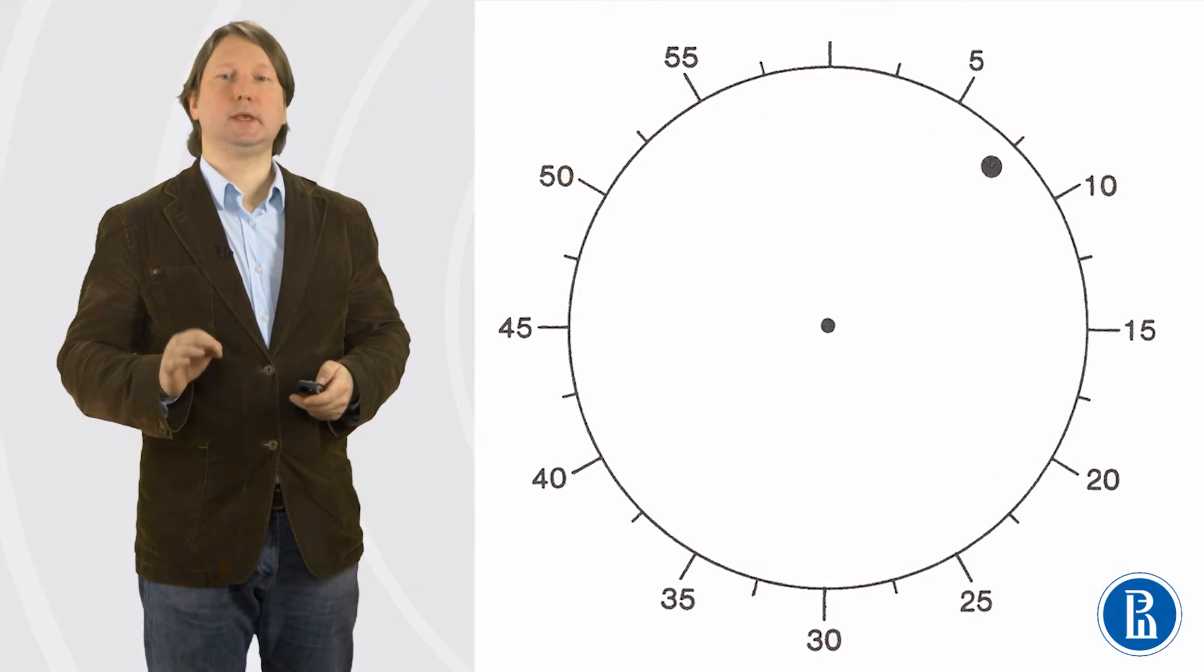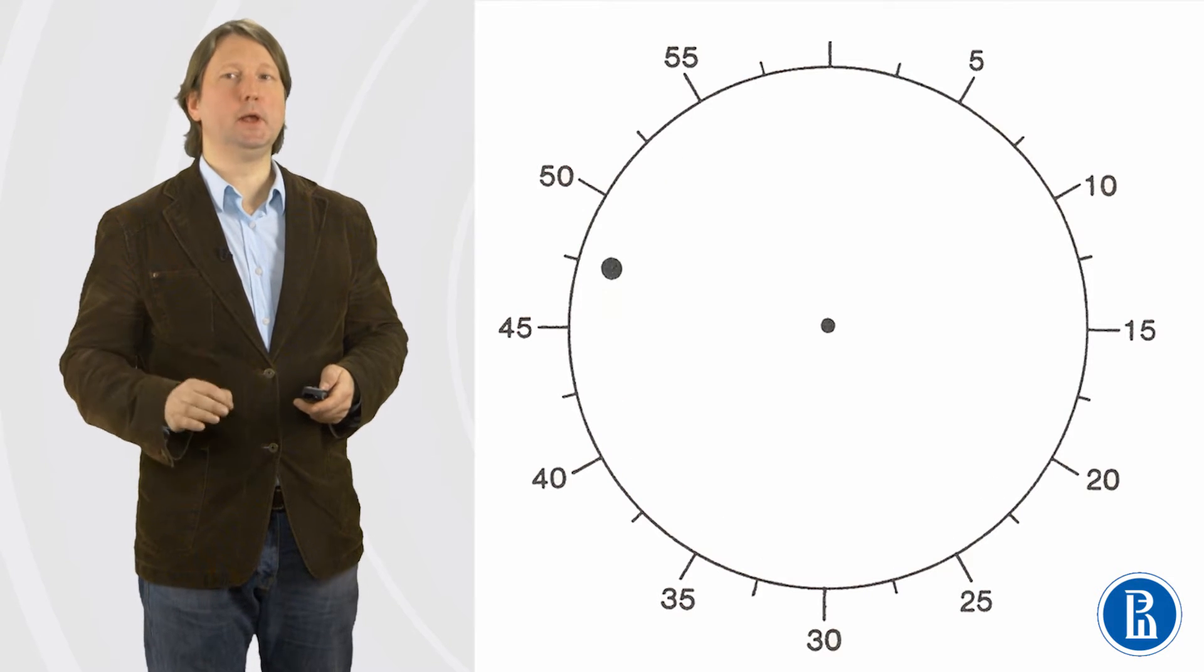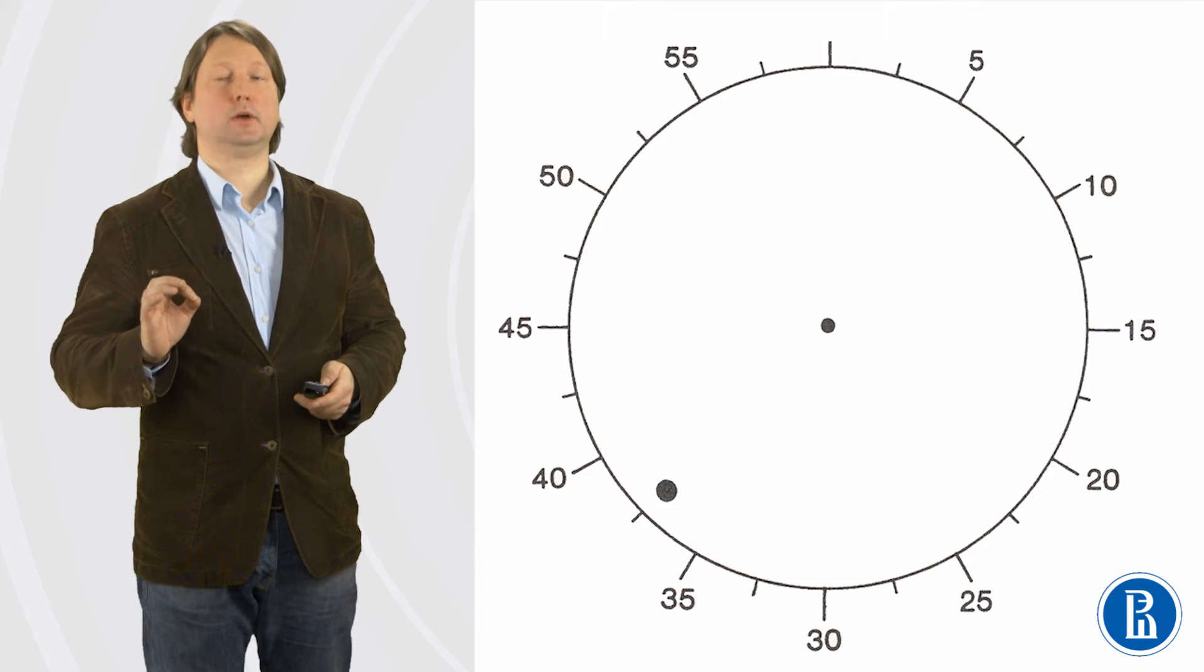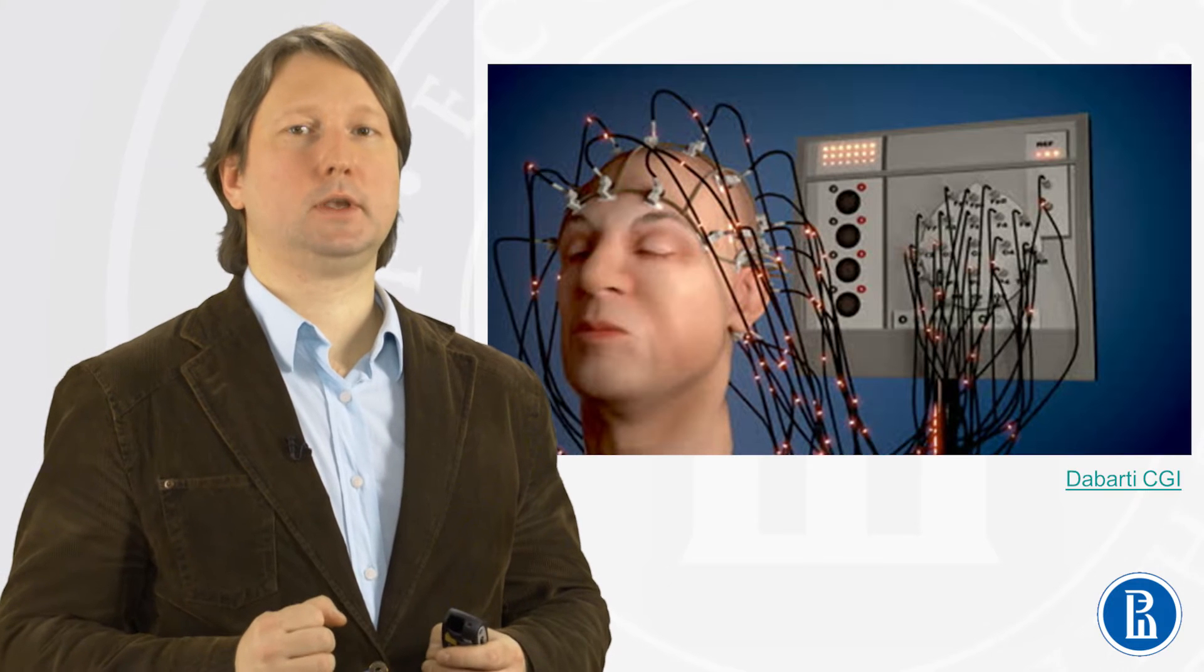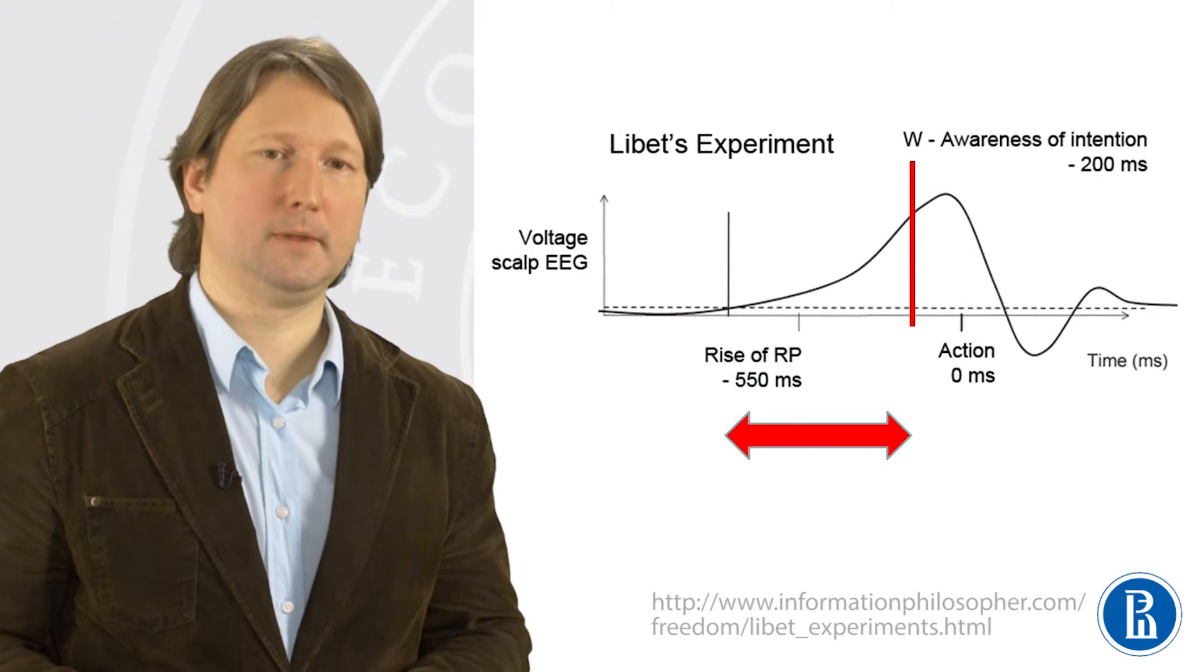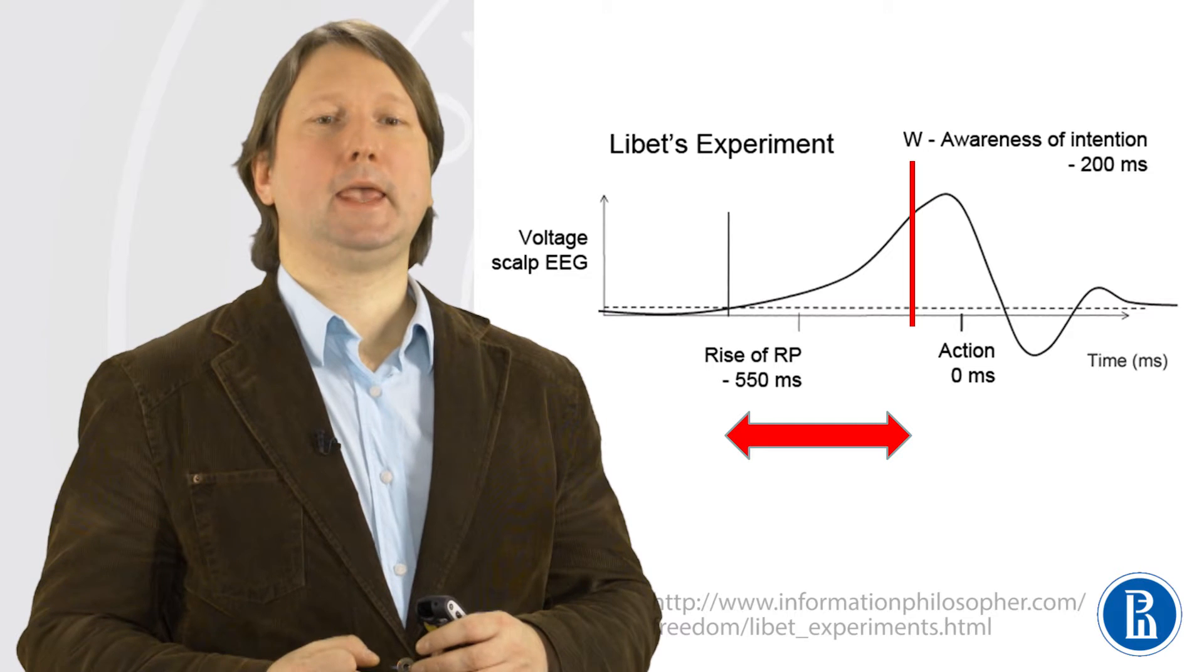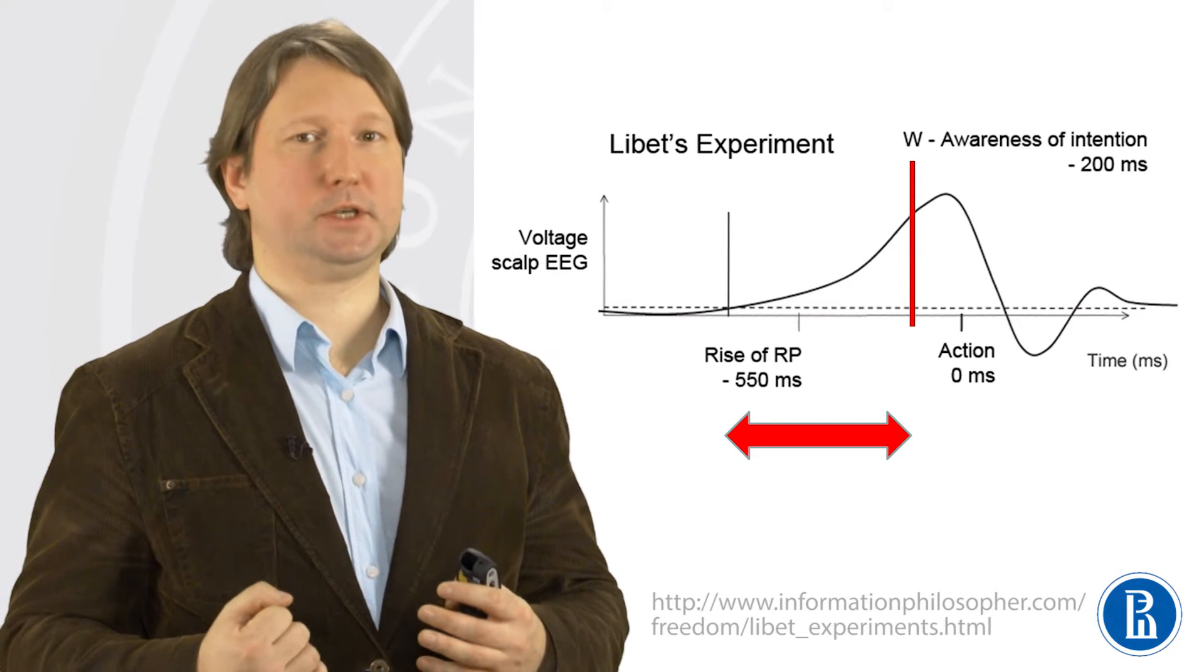With this technique, Libet conducted a very smart experiment and recorded 30 years ago the brain signal related to the decision making. He actually used EEG, electroencephalography, to detect brain activity related to the decision. Here you see a simplified version of his results. This line indicates the brain signal related to the decision to move finger.